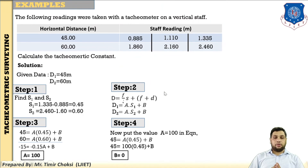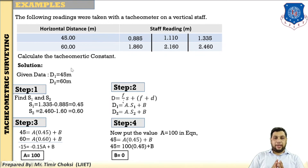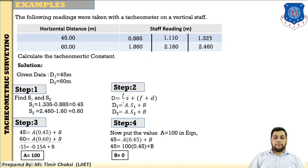Now I have taken one example from case one to clearly understand all the formulas. Readings are taken on a vertical staff. The horizontal distances are 45 and 60 meters. The instrument station is set up at P. For the first staff at 45 meters distance, the readings are lower: 0.885, central: 1.110 and upper: 1.335 meters respectively. For the second staff arrangement at 60 meters, the readings are 1.860, 2.160 and 2.460.